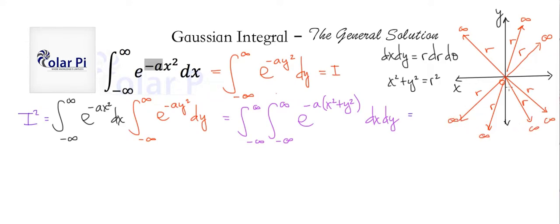And for theta, r goes from zero to infinity. And for theta, you want to go all the way around and back. So that's zero to two pi.